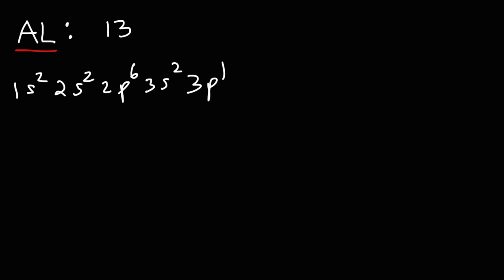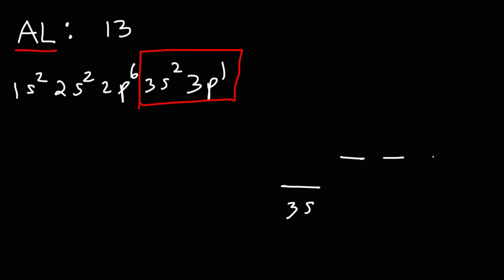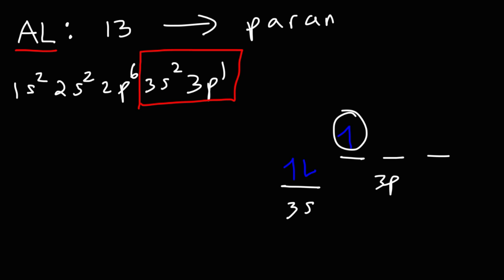Everything is going to be paired except the last sublevel. We're going to focus on the last two sublevels of aluminum — the 3s sublevel and the 3p sublevel. We have two electrons in the 3s sublevel, but only one in the 3p sublevel. So because we have an unpaired electron in aluminum, it is a paramagnetic substance. A paramagnetic substance is one that is weakly attracted to an external magnetic field.